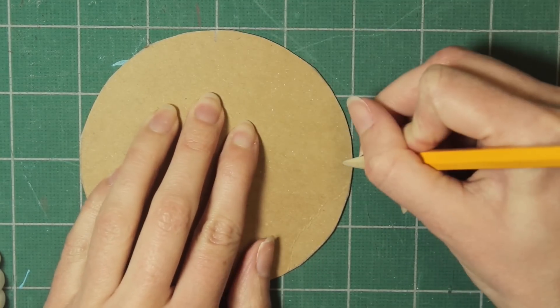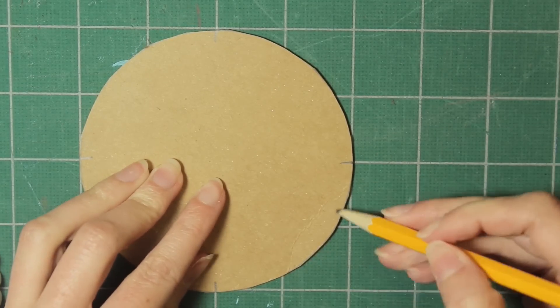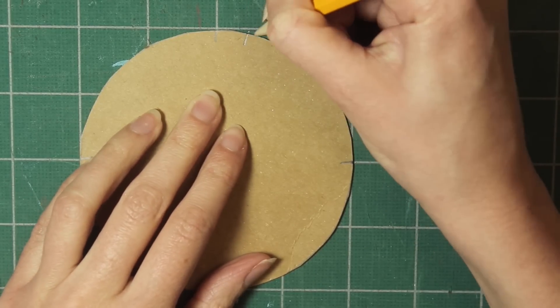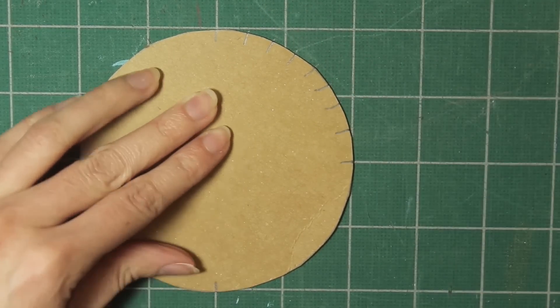Next, make a mark in the top center, right side, bottom, and left side. You can use a ruler to do this. Then in between these marks you're going to put seven more marks and try to space these fairly evenly, but it's okay if they're not perfect, it will still work anyway.